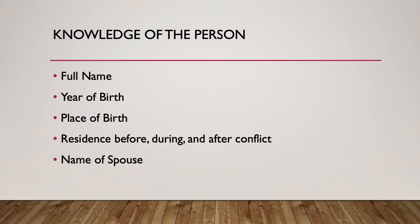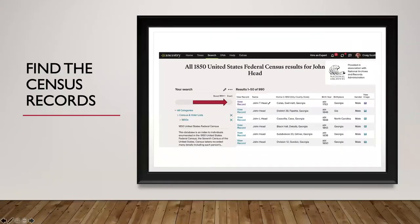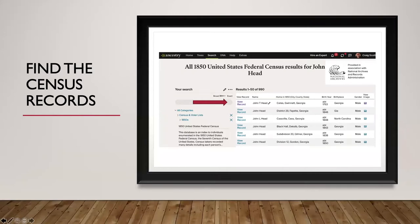The first thing I always do is go look for them in the census. Here is John S. Head in Georgia in the 1850 federal census. He appears to be deceased by 1860 — and in fact most Revolutionary War soldiers are going to be deceased by 1860, and most by 1850. He's in the household of James B. Head in Gwinnett County, Georgia. He's 87 years of age, and he's not in the 1860 census.